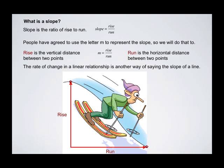The rate of change in a linear relationship is another way of saying the slope of a line. Slope, rate of change, and first differences all end up being the same thing. Rate of change equals slope.